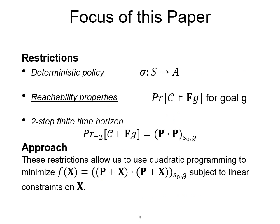Now we make a bunch of restrictions to make this problem easier. We focus in this paper on a deterministic policy σ, a function from states to actions. We only consider reachability properties, so formulas of the form FG, or eventually G, where G is some goal state. And we only look at time horizons of two steps. These restrictions allow us to reduce the problem to a quadratic programming problem where the objective function is quadratic and the constraints are linear.